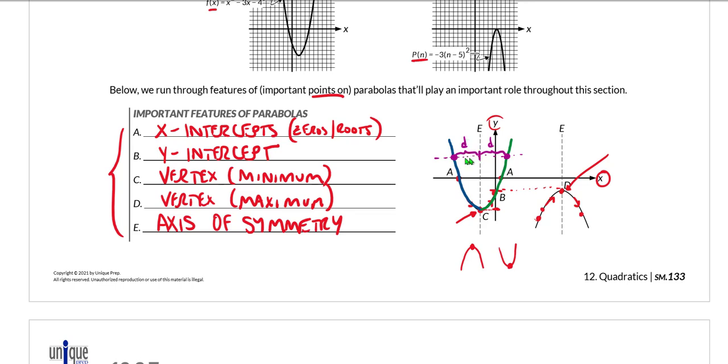Whatever the distance is from the axis of symmetry to this point on the left is, the same distance would be from the axis of symmetry to the point on the right. So those are several features of, or points on a parabola that will play an important role throughout our discussion of quadratics and graphing quadratics. You definitely should know all that information.